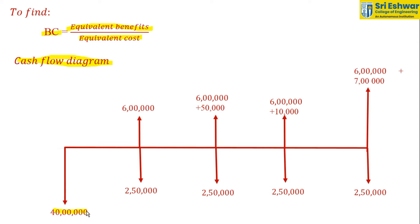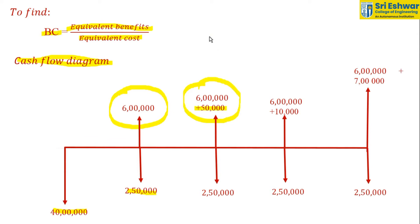This is the cash flow diagram. The first cost is Rs. 40,00,000, which is the initial expenditure. They are also spending Rs. 2,50,000 every year up to 15 years for operation and maintenance. In the first year, there is a profit of Rs. 6,00,000 from fuel savings, with an equal increment of Rs. 50,000 each year, so the second year becomes Rs. 6,50,000, as shown in the cash flow diagram.